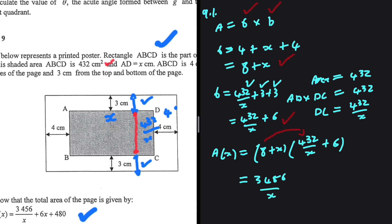8 multiplied by 432/x is 3456/x. 8 multiplied by 6 is 48. Now x multiplied by 432/x gives 432, and the x's cancel out. Plus 6x.